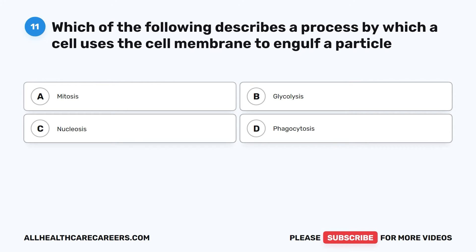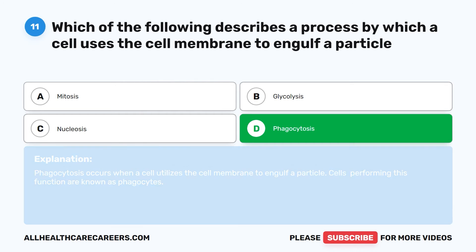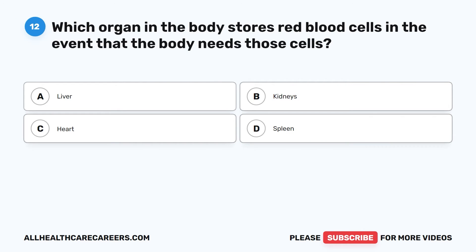The correct answer is D. Phagocytosis. Phagocytosis occurs when a cell utilizes the cell membrane to engulf a particle. Cells performing this function are known as phagocytes.